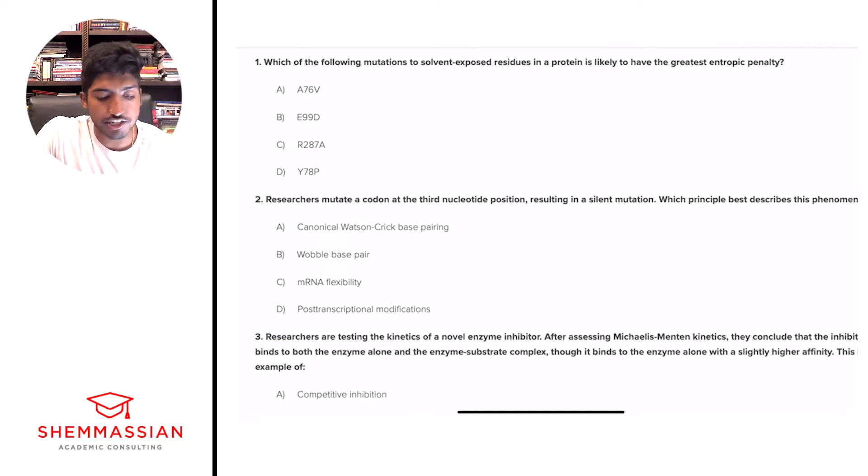Which of the following mutations of solvent exposed residues in a protein is likely to have the greatest entropic penalty? Is it A, A76V, B, E99D, C, R287A, or D, Y78P? All right. So right away, we look at what the question's asking and we're looking at which of these mutations results in the greatest entropic penalty. So we need to understand what the greatest entropic penalty means.